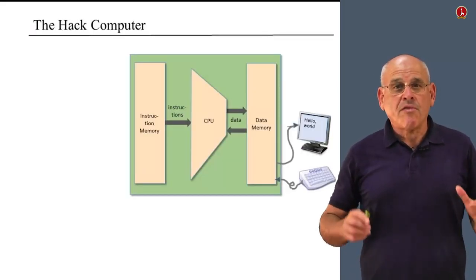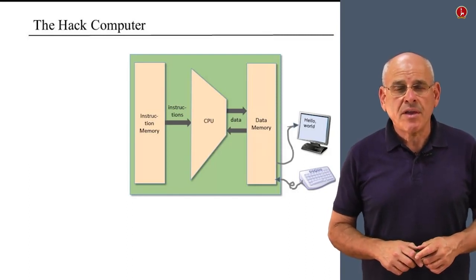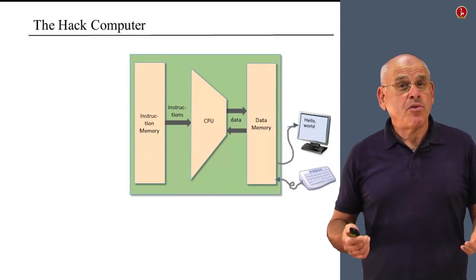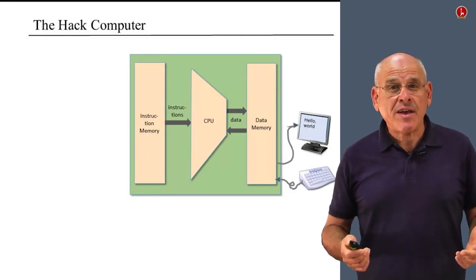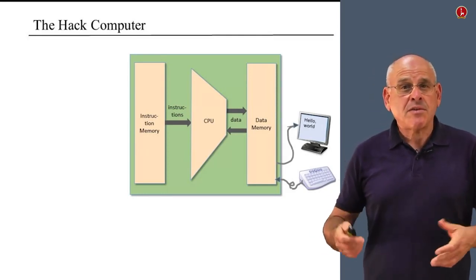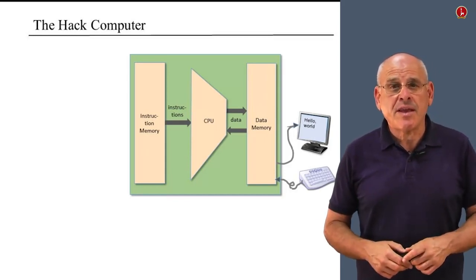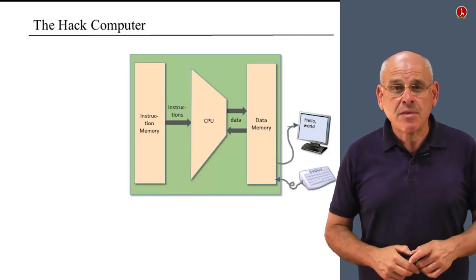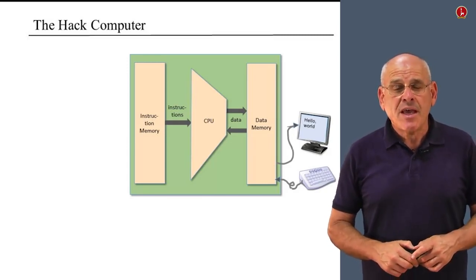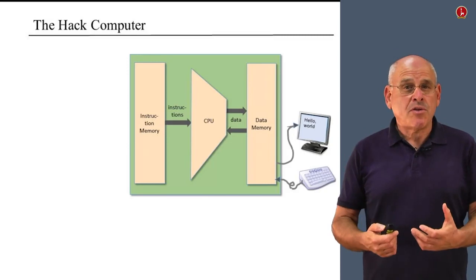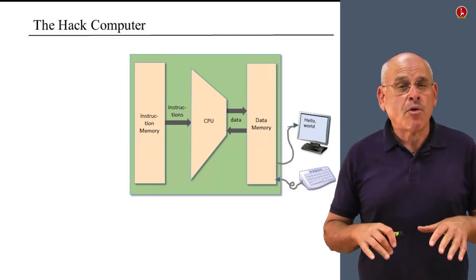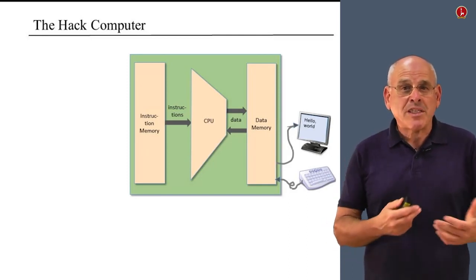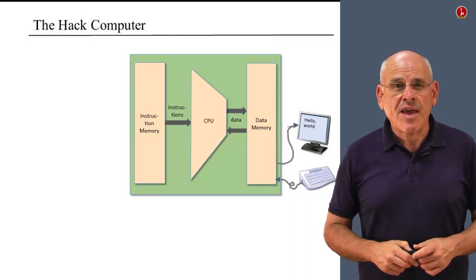Here we see the overall hardware architecture of the Hack computer, and we see something new. We have two fancy input-output devices: a raster display unit that enables us to take values from the computer and display them in a sensible way for humans, and a keyboard unit that enables us to interact with a program currently running in the computer, assuming the program accepts input from us.